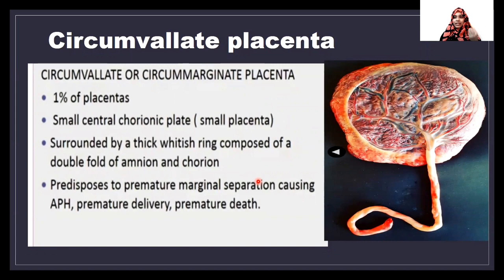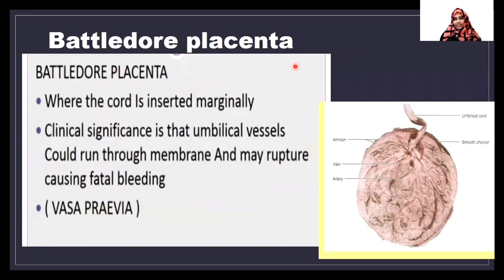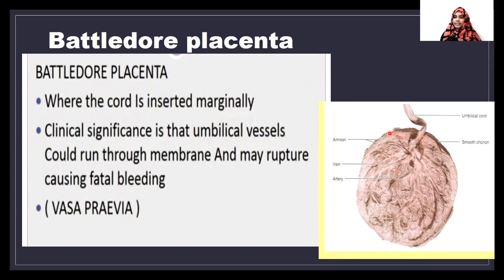The circumvallate placenta predisposes to premature marginal separation. The placenta can separate by two methods: central separation and marginal separation. This type of placenta undergoes marginal separation, causing bleeding during pregnancy. Next is battledore placenta, where the umbilical cord attaches to the placenta at the margin. The clinical significance is that there is a chance for rupture of the cord, leading to fatal bleeding.